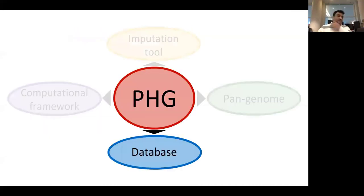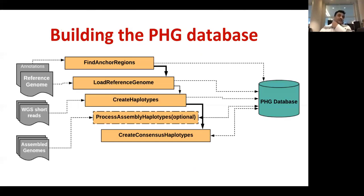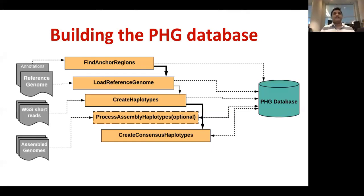PHG is basically a database. The pipeline first identifies anchor regions, loads the reference genome, creates haplotypes using GVCF or whole genome sequencing data, creates consensus haplotypes, and can also load genome assemblies. Once stored in the database, it is accessible — you can download any haplotype sequence at any interval of interest for further studies.